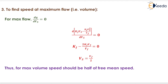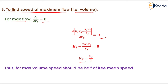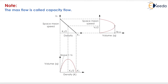The next condition is to find speed at maximum flow. For maximum flow, dQ upon dVs equals to zero. On solving this, we will have Vs equals to Vf by 2. Thus, for maximum volume, speed should be half of the free mean speed. Note that the maximum flow is called the capacity flow, which is shown here by the curve.